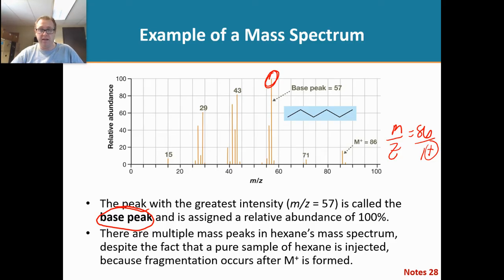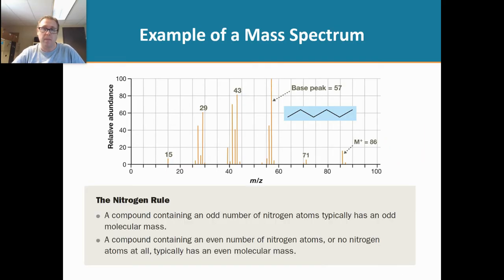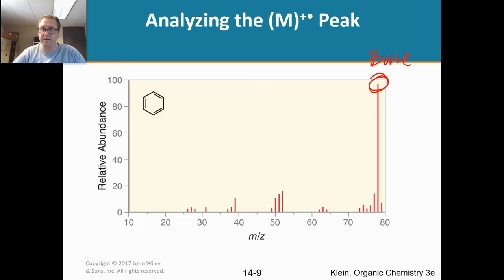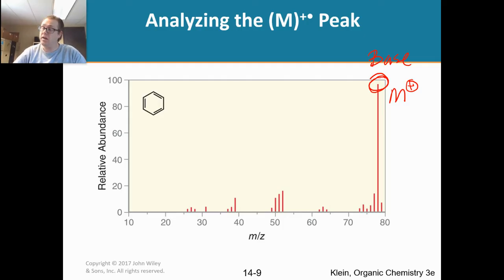Let's delve a little bit deeper into base peaks and molecular ion peaks and look at a few other examples. Here is a mass spectrum of benzene. For benzene, the base peak is the largest peak. In this case, it is also our molecular ion peak — they are one and the same. Now, this does not always happen. More often than not, it doesn't. You cannot assume that the largest peak is the molecular ion peak. But in benzene's example here, it is.